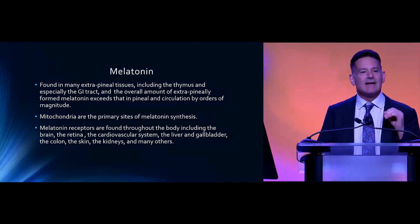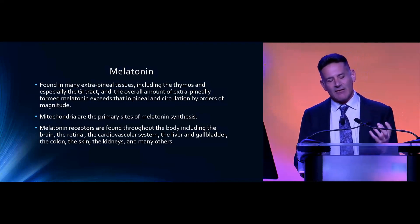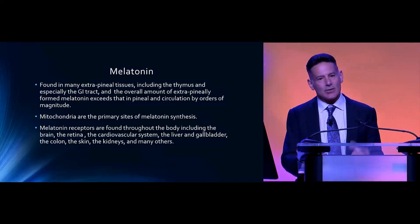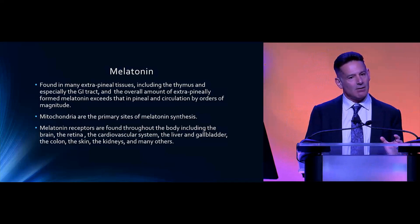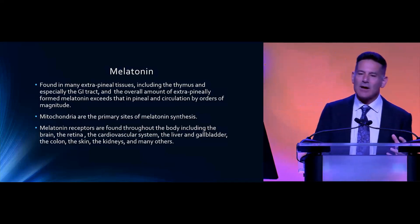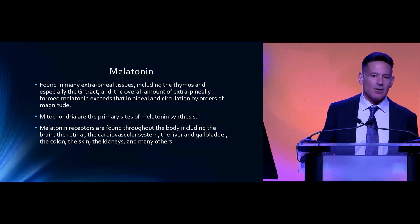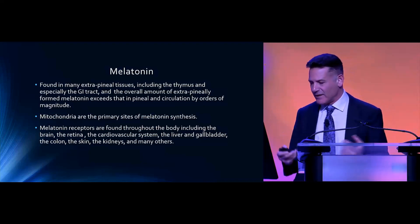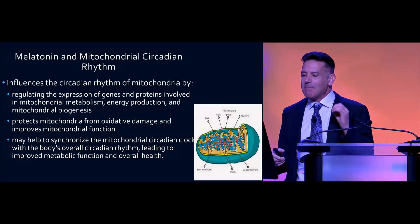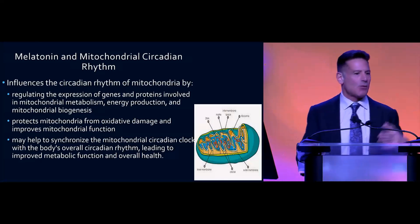Melatonin is probably the most ancient molecule we're aware of — it was present when the first organism developed on this planet. It is a conserved molecule, and its primary role, other than what we're about to discuss with the pineal gland, is as an antioxidant. And why is it in the mitochondria? Because that's where the bulk of oxidative stress occurs.